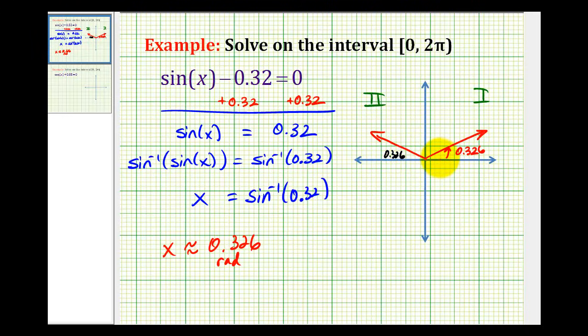So to determine the measure of this angle in the second quadrant, or this angle here, we'll have to take pi radians and then subtract zero point three two six radians. So it'll be pi minus zero point three two six radians for our second solution.